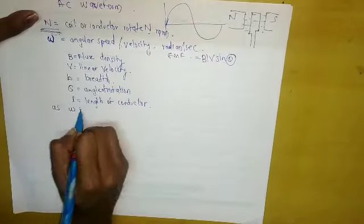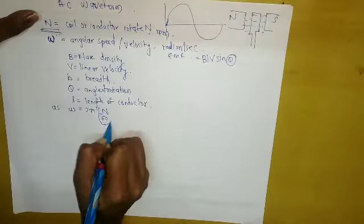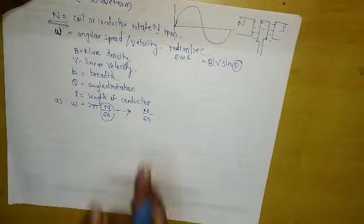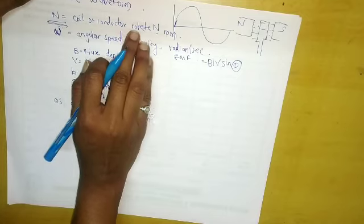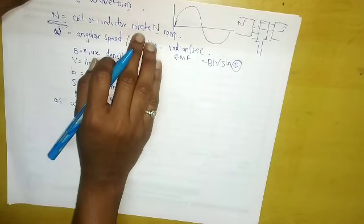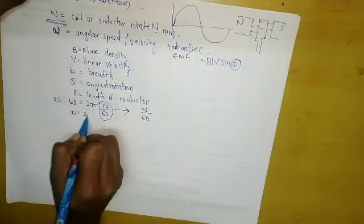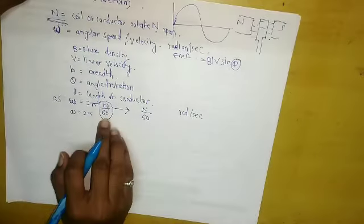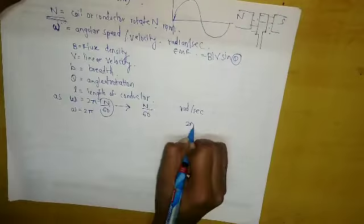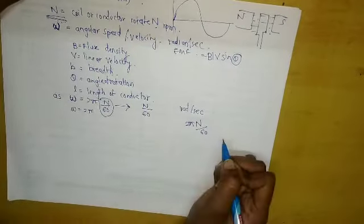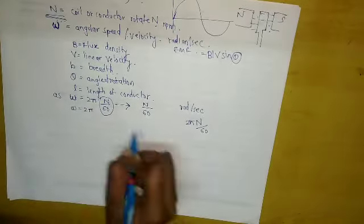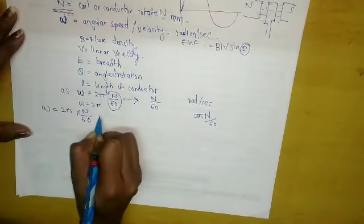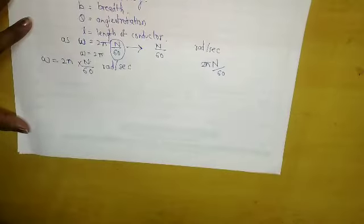We know that omega (angular speed) equals 2πN/60. Why N/60? Because in one second, the number of revolutions is N/60. We want it in radians per second, so we divide by 60. So ω = 2πN/60 radians per second.